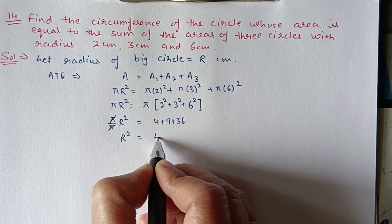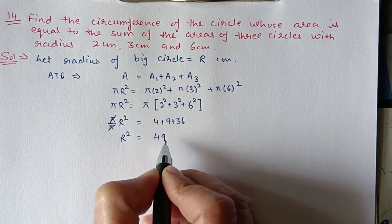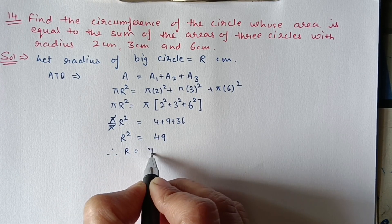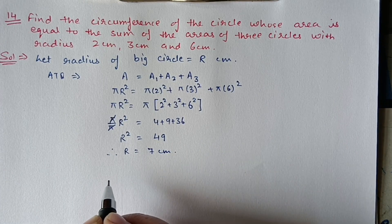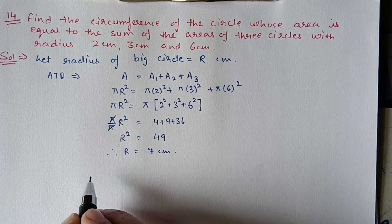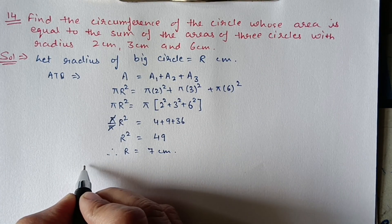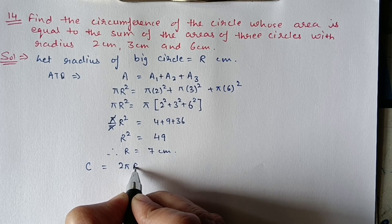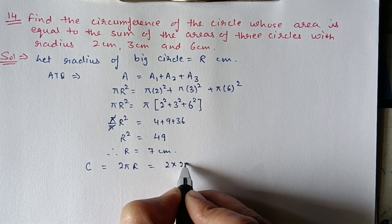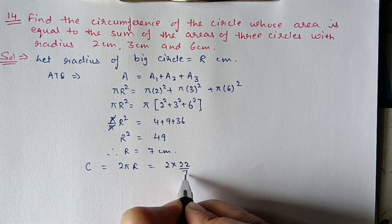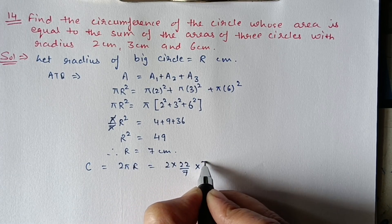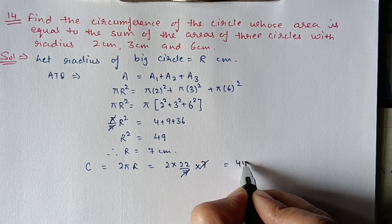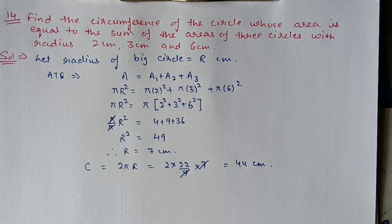So r² = 49, meaning r = 7 centimeter. We have to find the circumference. Circumference = 2πr = 2 × 22/7 × 7. The 7 cancels out, giving 2 × 22 = 44 centimeter.